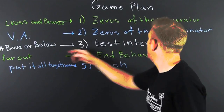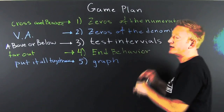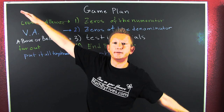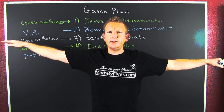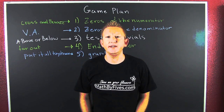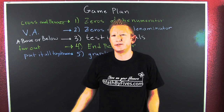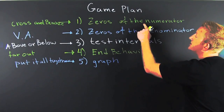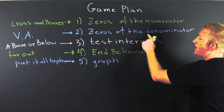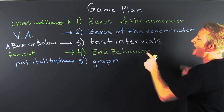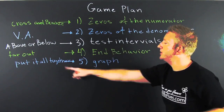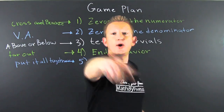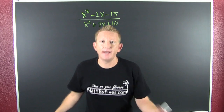Then you're gonna get the end behavior. Zero, oblique, or somewhere in between — it's the numero finis in the denominator. So you're gonna stick to the game plan: zeros of the numerator, zeros of the denominator, test the intervals, end behavior. And then you're gonna put it all together in one pretty picture. Now let's go draw that picture.